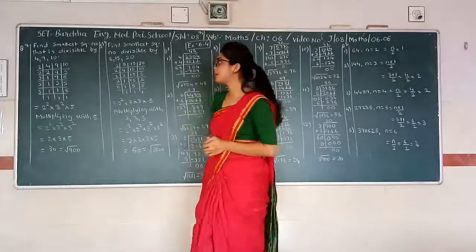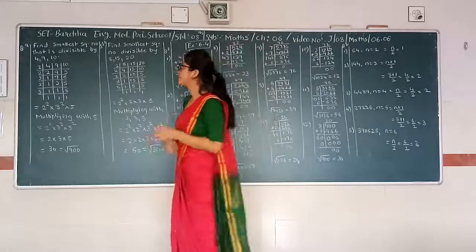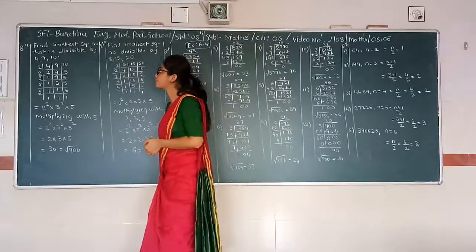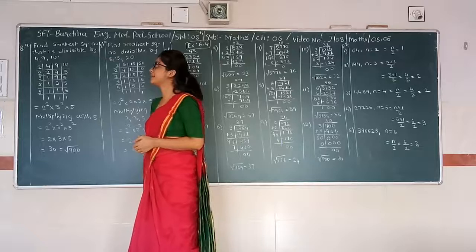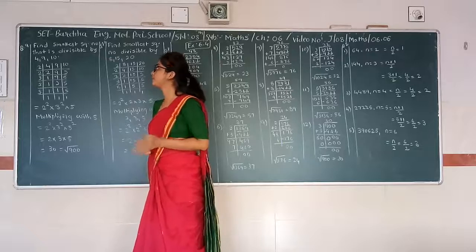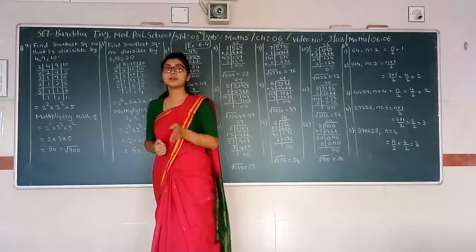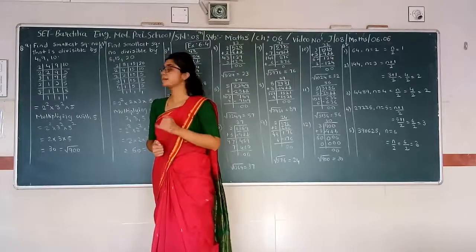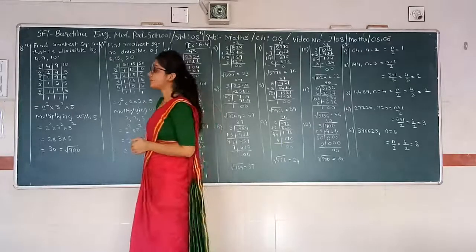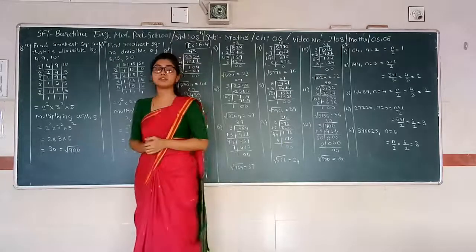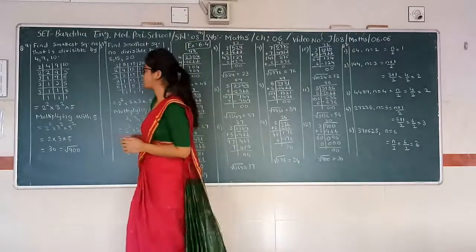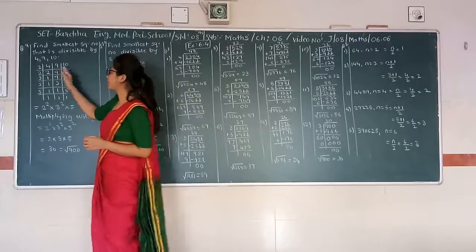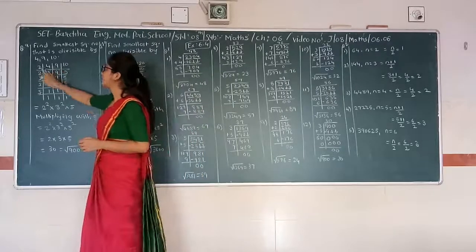Question number 9: Find the smallest square number that is divisible by 4, 9 and 10. First of all, we have to find the LCM of 4, 9 and 10.